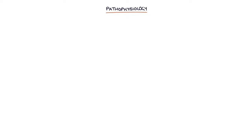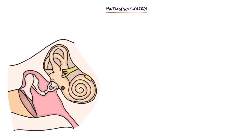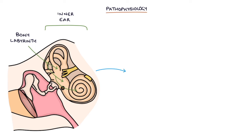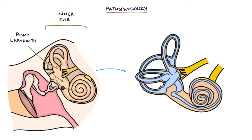Let's start by talking about the pathophysiology. The inner ear contains the bony labyrinth, which is a complex bony structure that contains fluids called perilymph and endolymph.